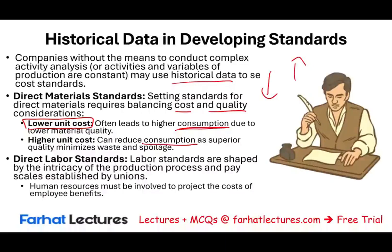The same applies to direct labor standards. If you pay your employees more and train them well, cost will go up, but as a result, they may get the work done faster in less time with higher quality output. Setting direct labor costs involves human resources, and that's why it's a complex process — you have to involve many people in determining those standard costs: how much it should cost, how much training is needed, and so on.